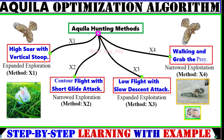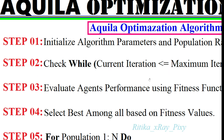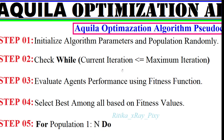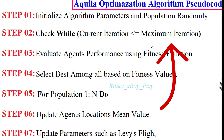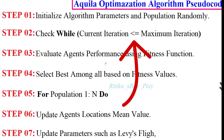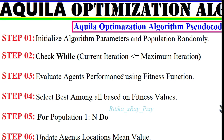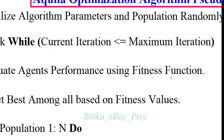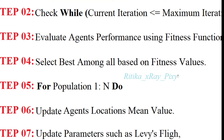Now we have the various steps used in this algorithm. First, we initialize the parameters and the population randomly. This is a population-based metaheuristic optimization algorithm, so we have a population of n agents initialized randomly in the search space. After that we check whether the current iteration is greater than or equal to the maximum number of iterations. Using a cost function or fitness function we evaluate the performance for each agent in the search space.